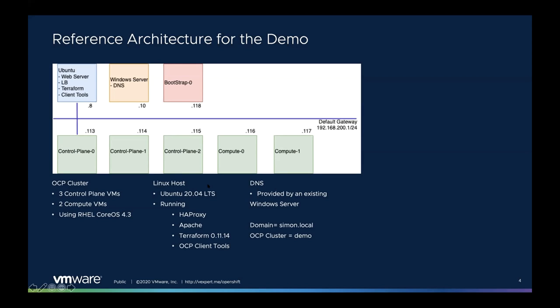We have a requirement in the environment to use a load balancer service and also a web service to help with the bootstrap. So we're going to run a Linux server that I've already built, running HAProxy for load balancing and Apache for the web service. We need the web service to help bootstrap the environment, and the HAProxy service will allow us to load balance the API FQDN across the three master nodes. I'm going to use Terraform running from the Linux box to deploy the nodes, along with some OpenShift client-specific tools that we'll have downloaded.